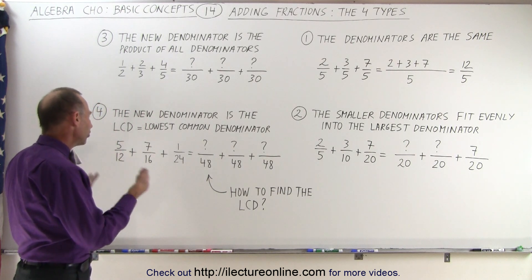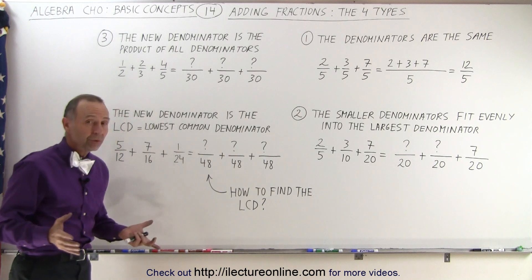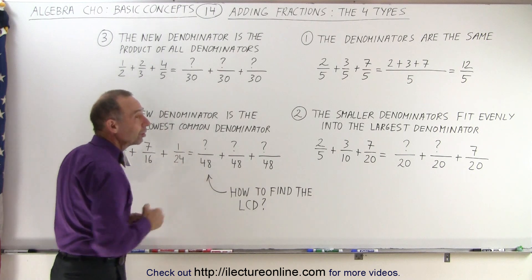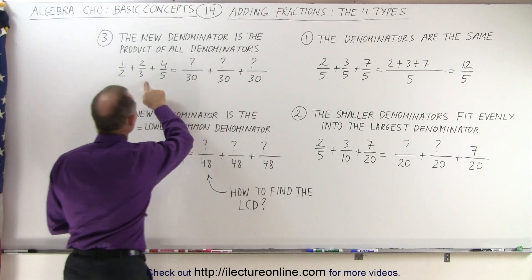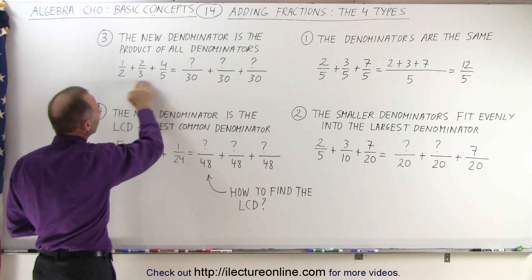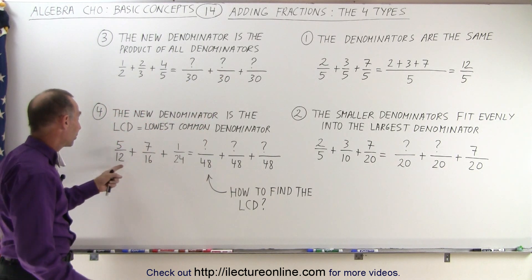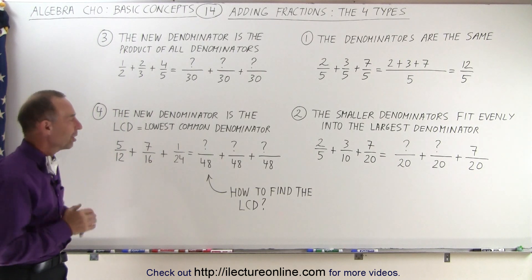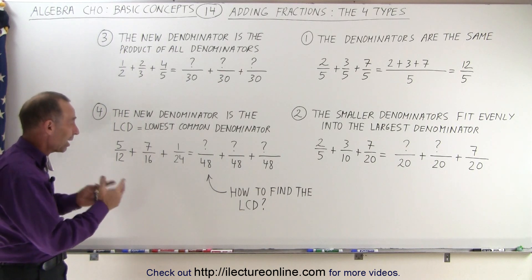Finally, you have a situation where the denominators are not all prime numbers, and sometimes you can come up with a number other than simply multiplying all the denominators together. Here the denominators were small prime numbers so we could multiply them all together, but imagine doing that with 12 times 16 times 24 — you would get a huge denominator, and it turns out you don't need to do that. You could, and it would still work, but it would be a lot more work.